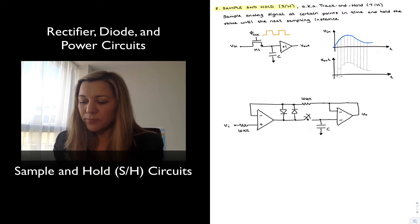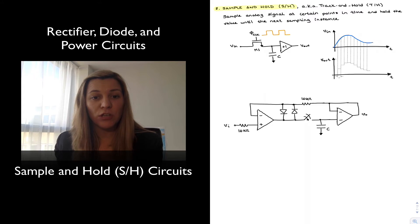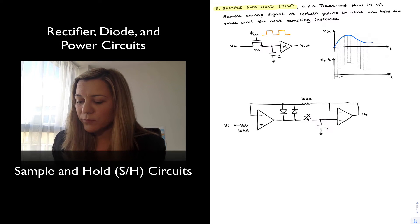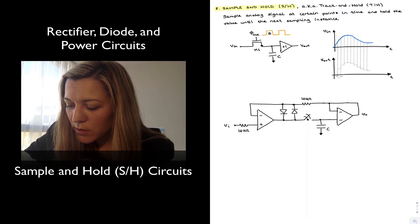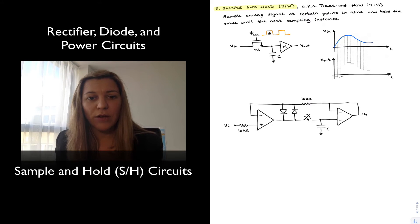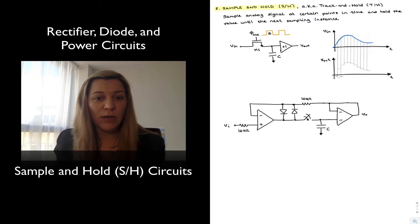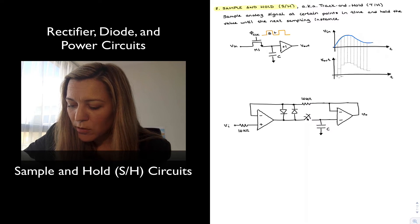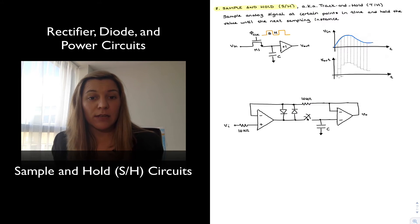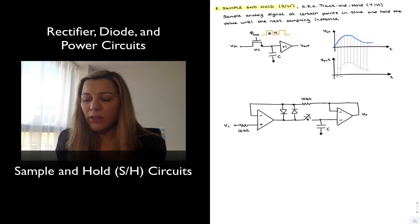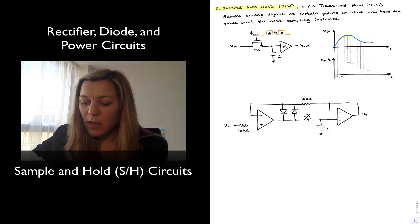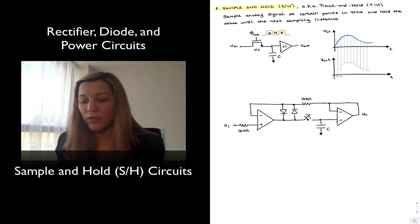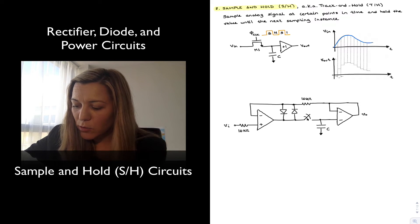When the clock goes high, the transistor is conducting, and so there is a path from Vin to capacitor C, and the capacitor will charge to the voltage value of Vin. That will be the sampling operation. Then as the clock signal goes low, the transistor goes into cutoff — it will be open — and since the capacitor is connected to a high impedance terminal, hopefully it will be able to hold its value. There will not be substantial discharge; this will be the hold part of the cycle, until the next sampling event when the clock goes high again, and then the capacitor will sample the input signal again by either charging or discharging to the new value of the input signal. And then it will hold it again, and so forth.